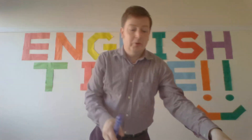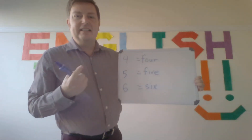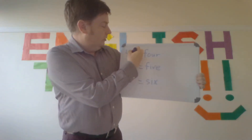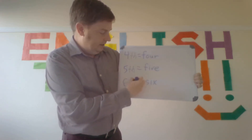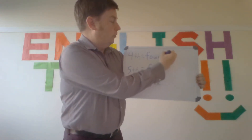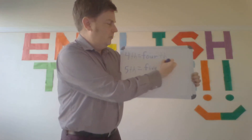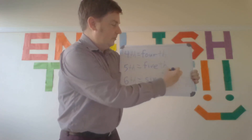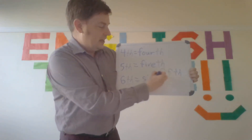And for numbers four, five, and six, instead of 'st,' 'nd,' or 'rd,' you use 'th.' So 'fourth.' And 'fifth.' And 'sixth.' For four, you add 'th' to make 'fourth.' You wouldn't say 'fiveth' — it's 'fifth,' spelled f-i-f-t-h. And sixth, just add 'th.'